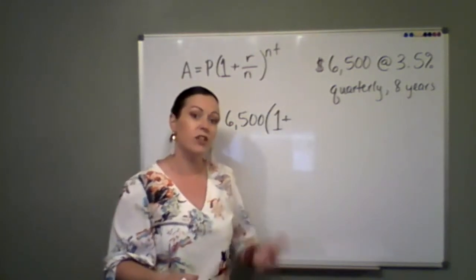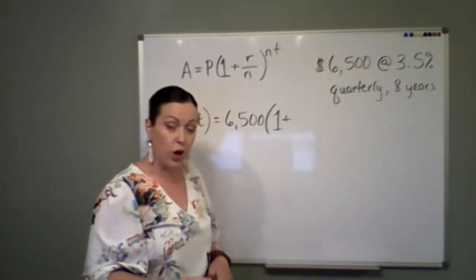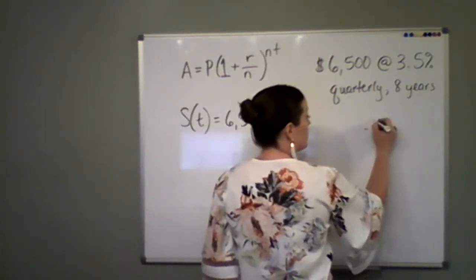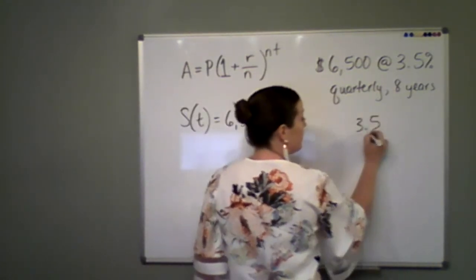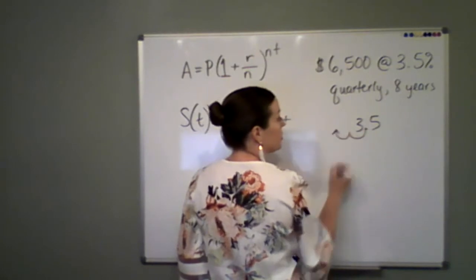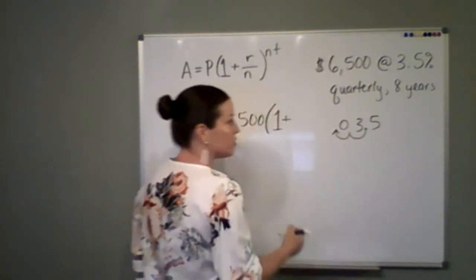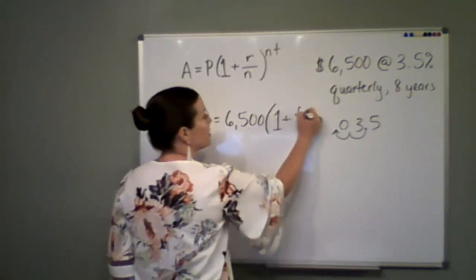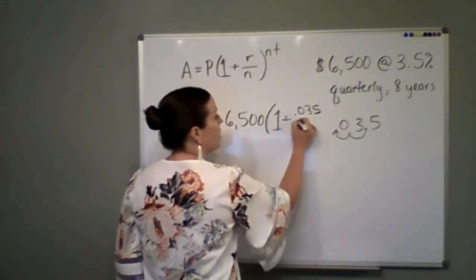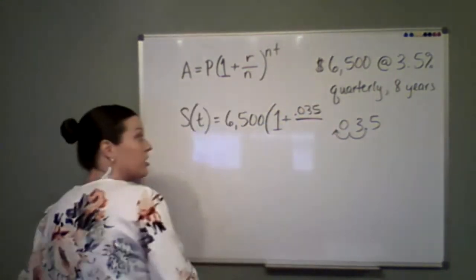I then convert that to a decimal value first, which just means I moved the decimal over. So if I'm at 3.5, I need to move it left two places. So it's 0.035. So 0.035 over how many times is calculated in the year?